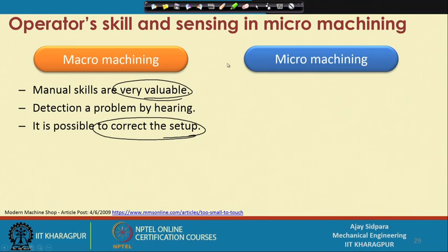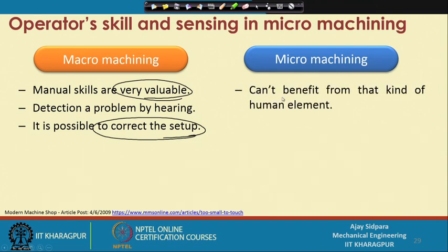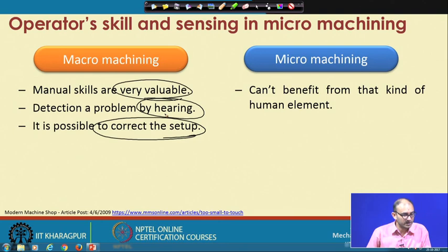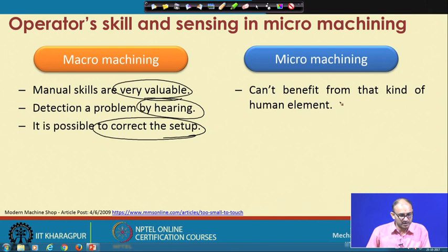In micromachining, you cannot benefit from this human element. You cannot detect problems by hearing, and sometimes fumes indicate very high temperatures or aggressive tool-workpiece interaction, but smelling is also not possible here. The tool size is very small, even difficult to detect by the naked eye, and the cutting is completely underneath the tool, so you cannot tell whether the tool is in contact with the workpiece or not.